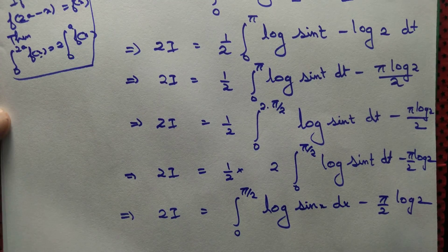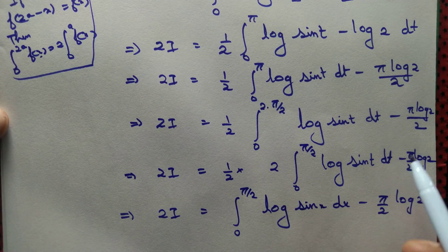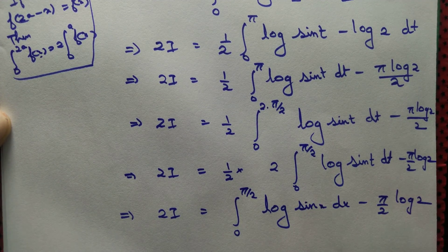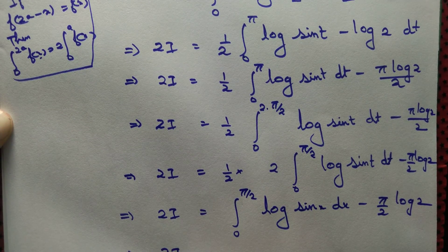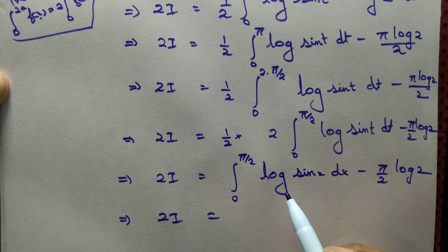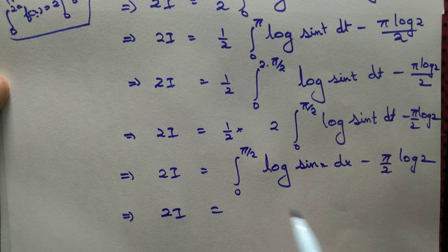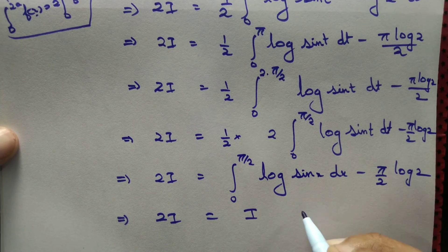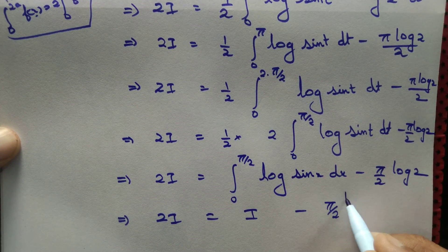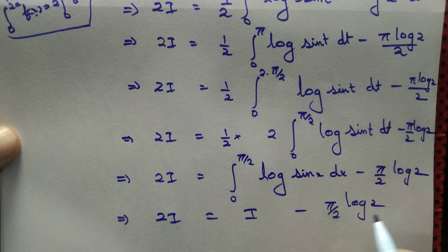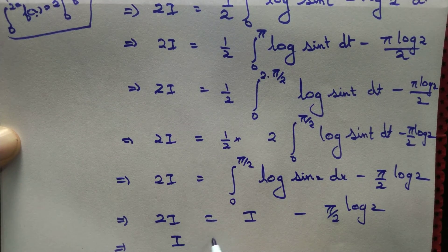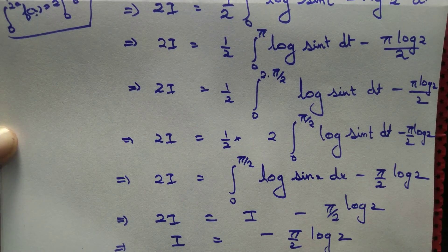Since t is a dummy variable, the integral from 0 to π/2 of log(sin t) dt is exactly the same as the integral from 0 to π/2 of log(sin x) dx, which is precisely i — the original quantity we set out to compute. Taking i to the left-hand side: 2i − i = i, giving us i = −(π/2) · log 2. And we are done.